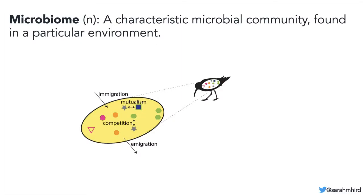I like to start my talks with a definition of the word microbiome, because some people have heard it and some people are confused by it, including people who study it. In this definition — a characteristic microbial community found in a particular environment — I have two key words. Microbial means all microorganisms: eukaryotes, bacteria, archaea, viruses. The particular environment part means that microbiomes are defined by their surroundings. We can talk about the human microbiome, which includes every microbe on every human, or we can talk about the skin microbiome on the dominant hand of bus riders in New Haven during flu season. It really depends on the question.